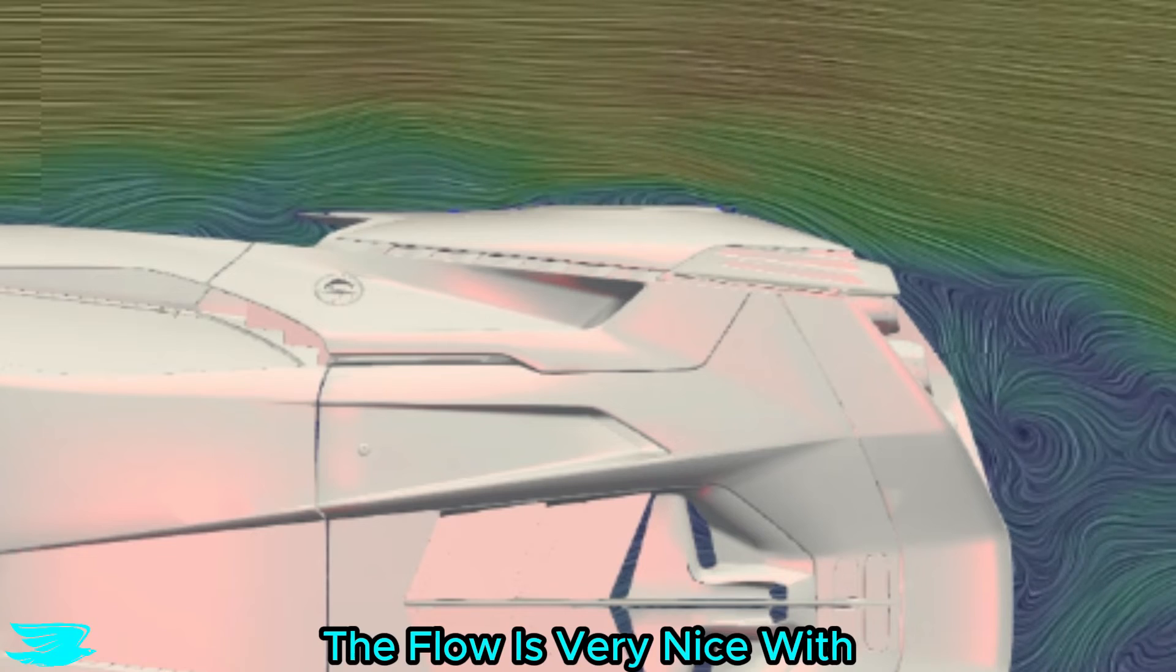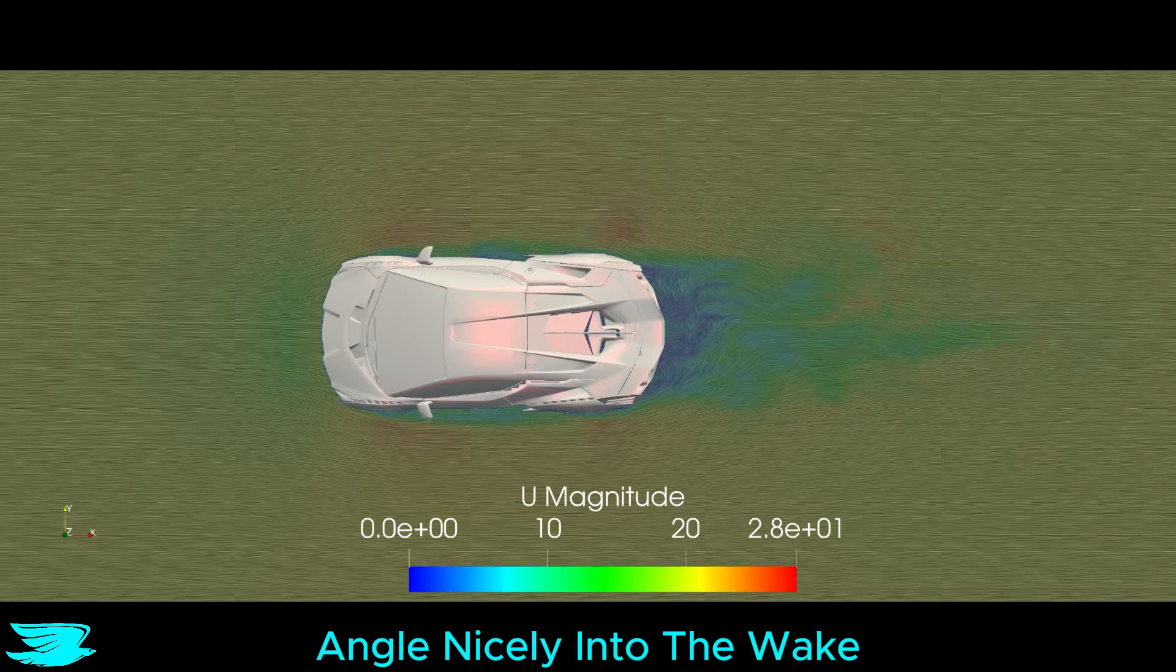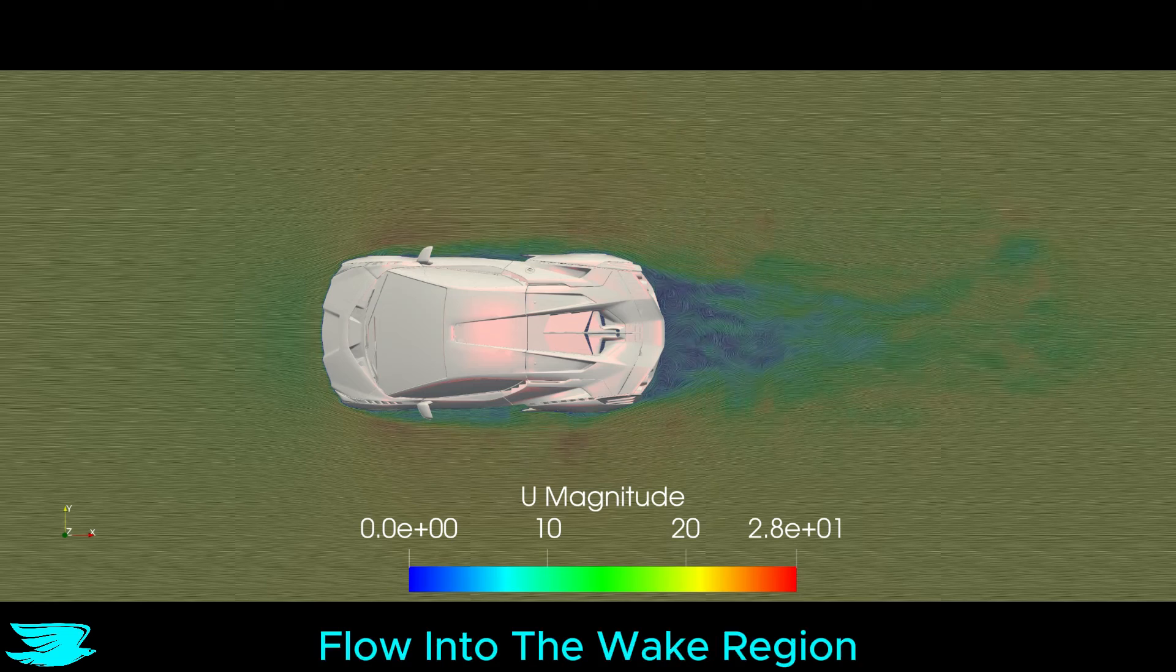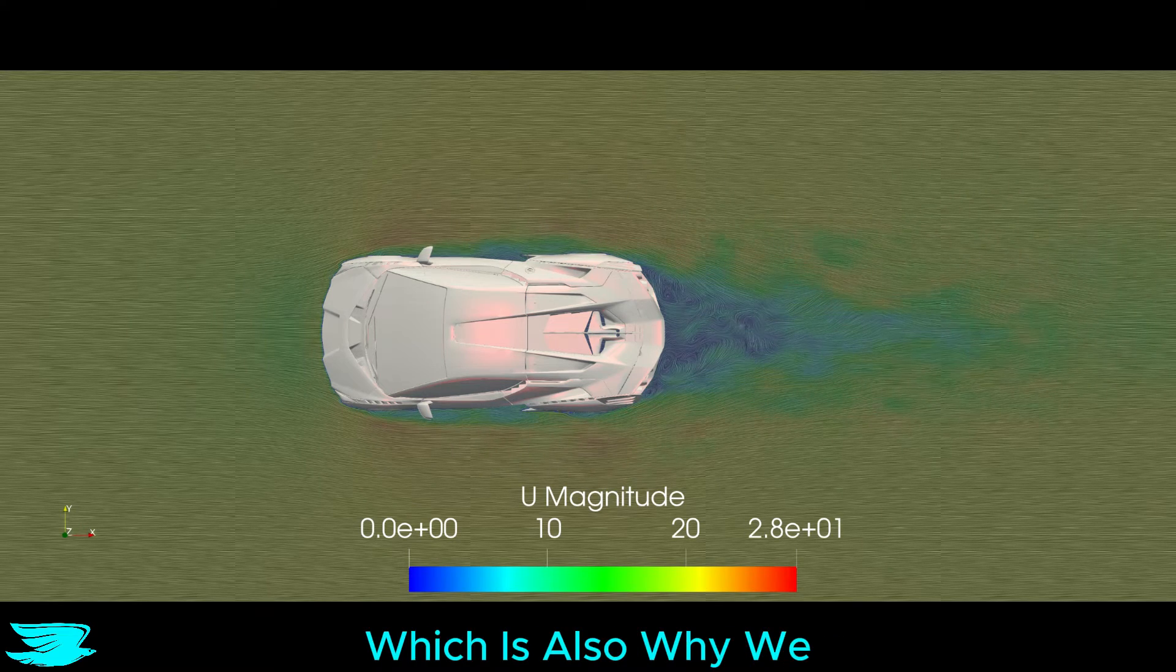Around the rear wheels, the flow is very nice with not much of a wake at all. The rear edges of the car are angled nicely into the wake, which helps direct the flow into the wake region, which is also why we get such a small wake.